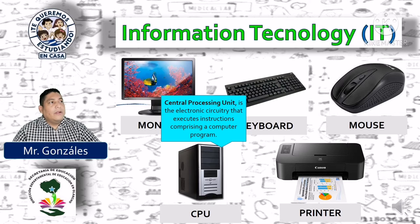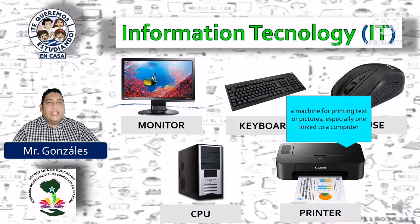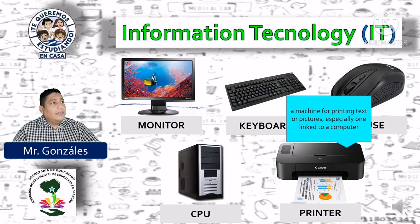CPU — Central Processing Unit — is the electronic circuitry that executes instructions comprising a computer program. Unidad de procesamiento central es el conjunto de circuitos electrónicos que ejecuta instrucciones correspondientes a un programa de computadora. Printer: a machine for printing text or pictures, especially one linked to a computer. Una máquina para imprimir textos o fotografías, especialmente conectados a una computadora.